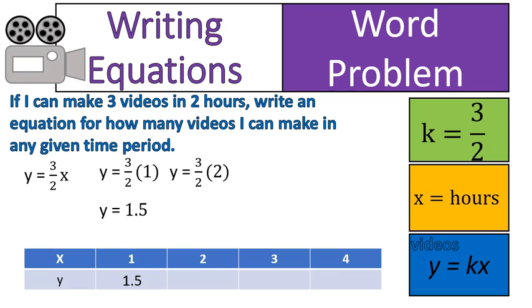Let's continue on. I substitute my value of 2 in for x. Now I do 3 over 2 times 2 which gives me my value of 3. In 2 hours, I could make 3 videos. In 3 hours, I multiply that out and I could make 4 and a half videos. And in 4 hours, I could make 6 videos.